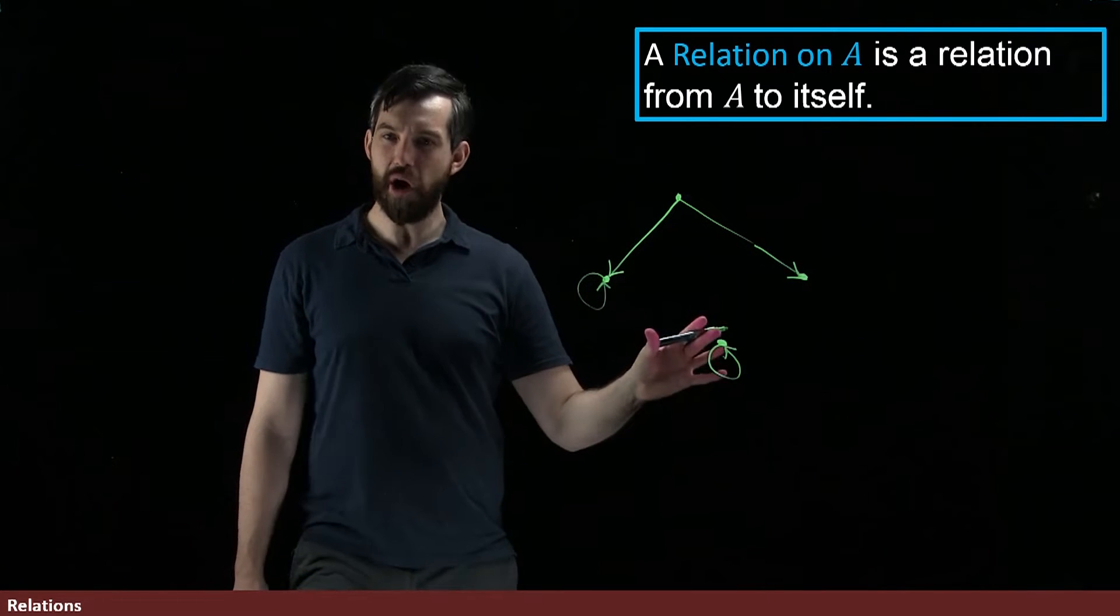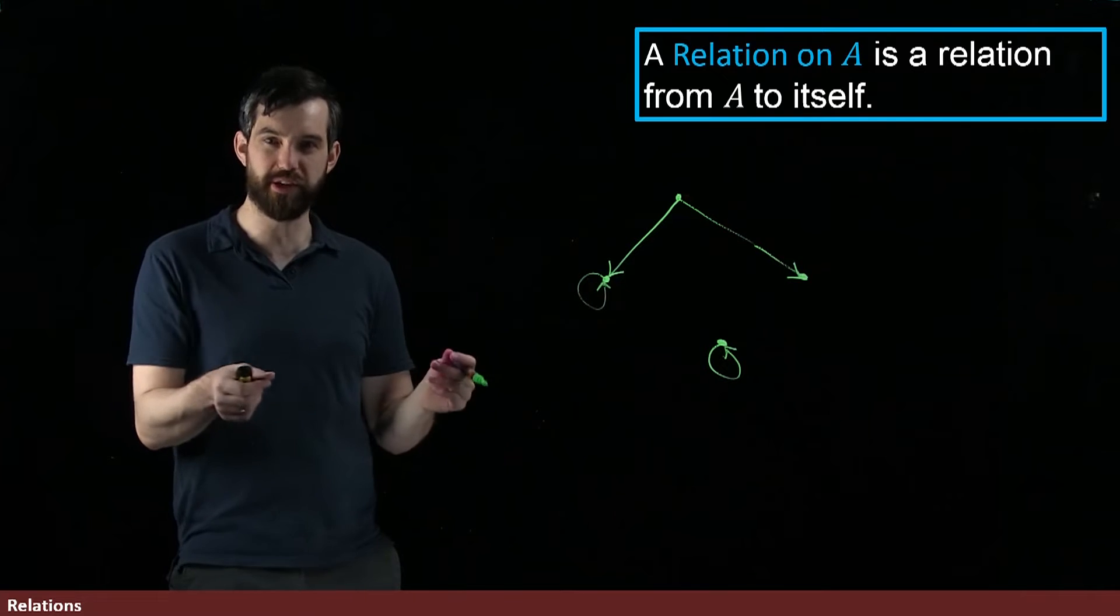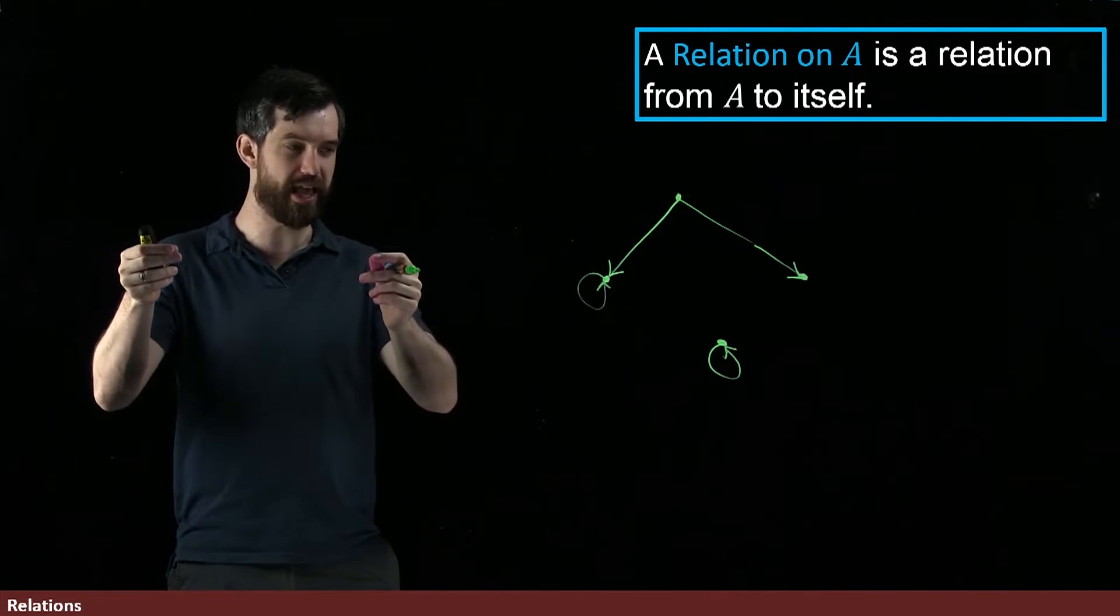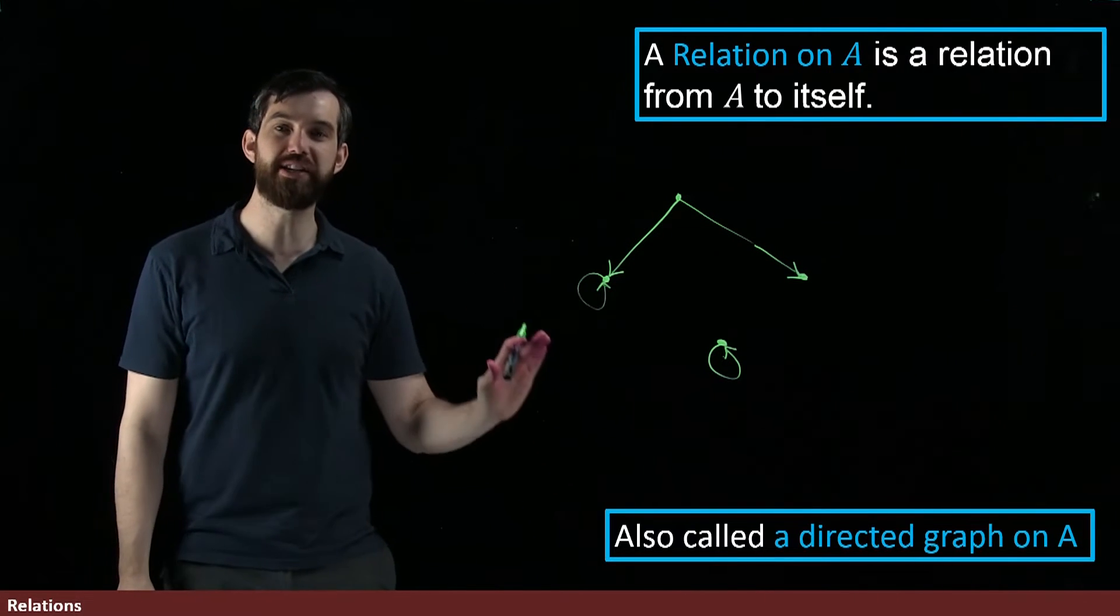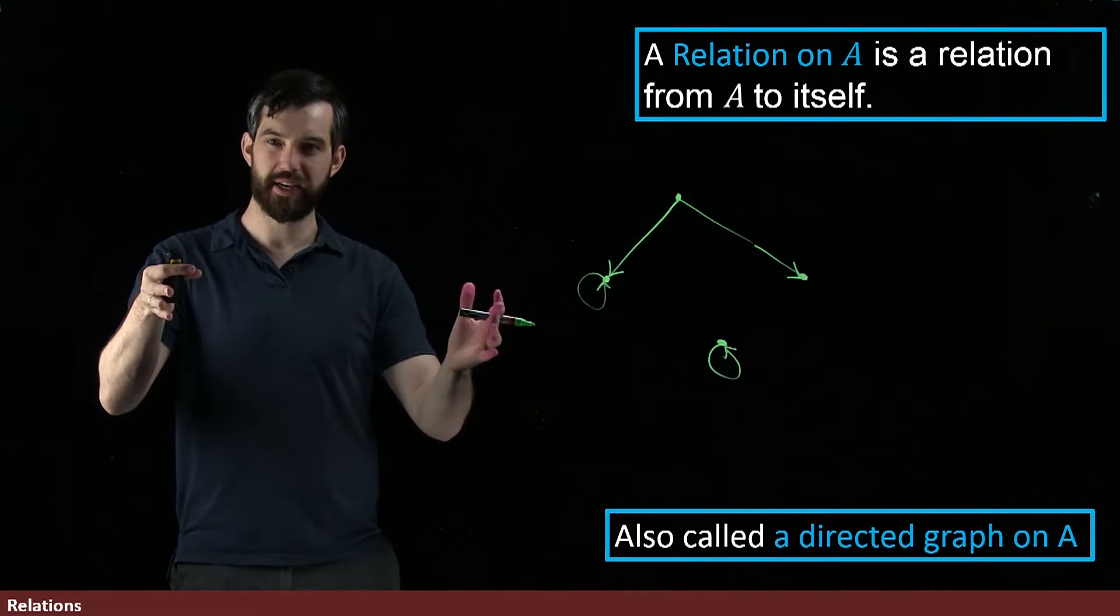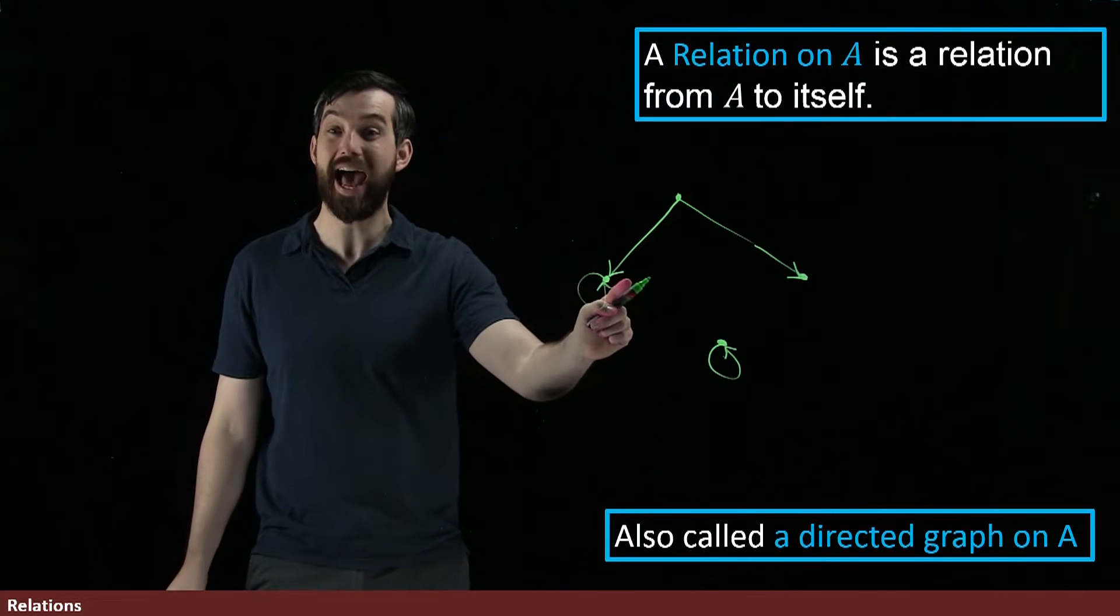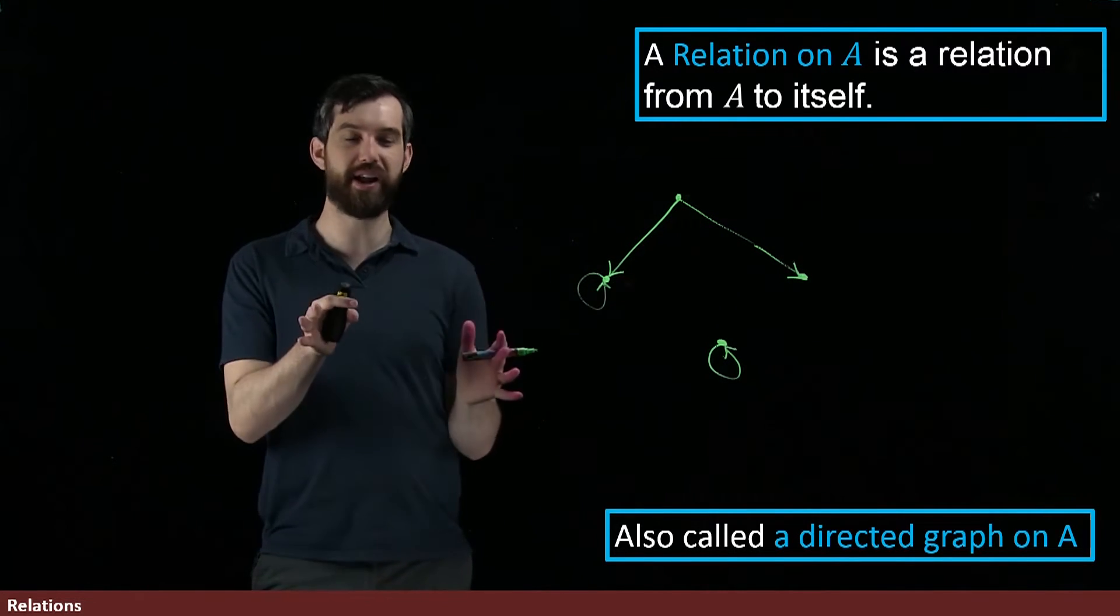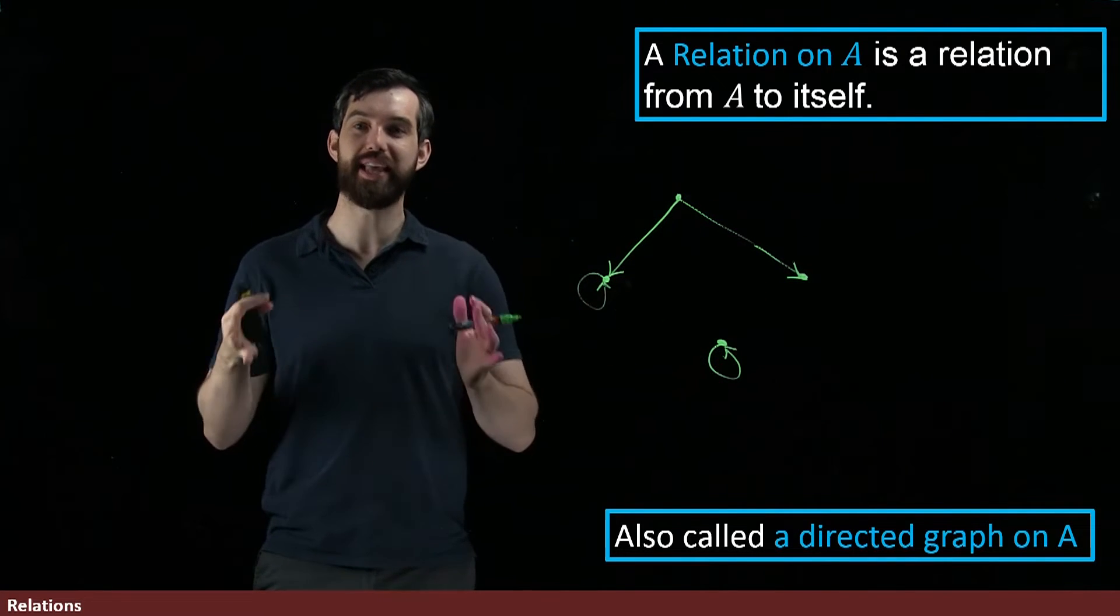This kind of construct that I'm drawing, where I put my points and then draw arrows between those points, which is a relation on A, an arrow diagram that starts on things in A and finishes on things in A, this is also referred to as a directed graph. You've listed your various elements, and then you draw directed arrows. Directed means it has an arrow on it, not just a connection, between those various elements and you get some graph between this set A.